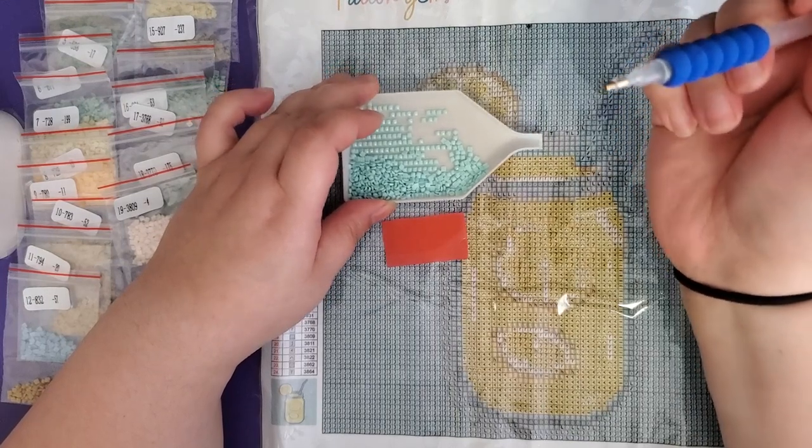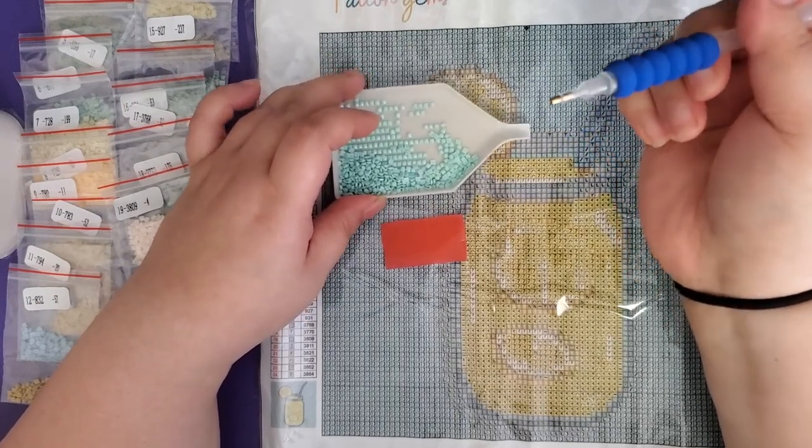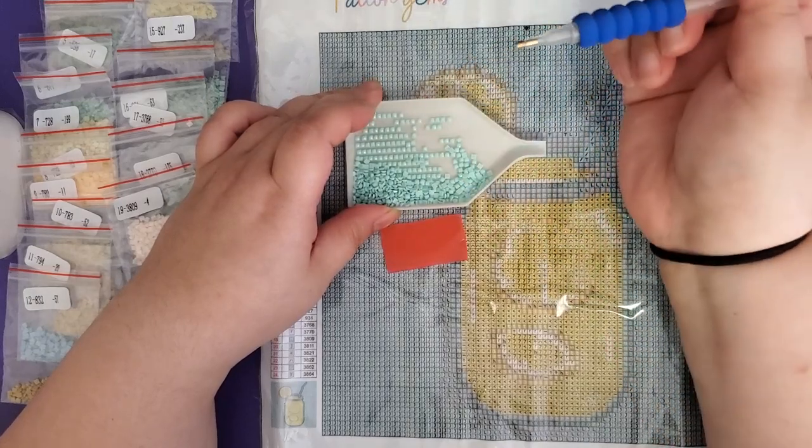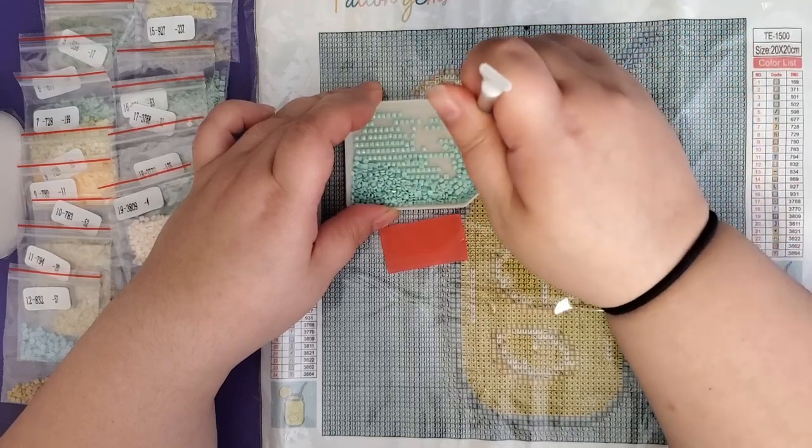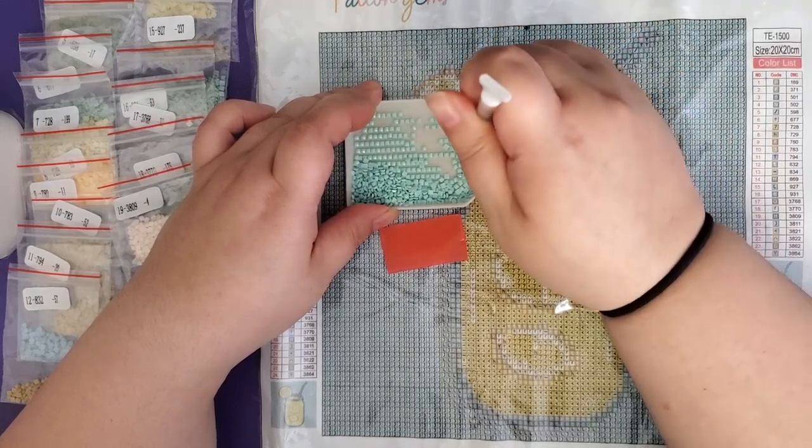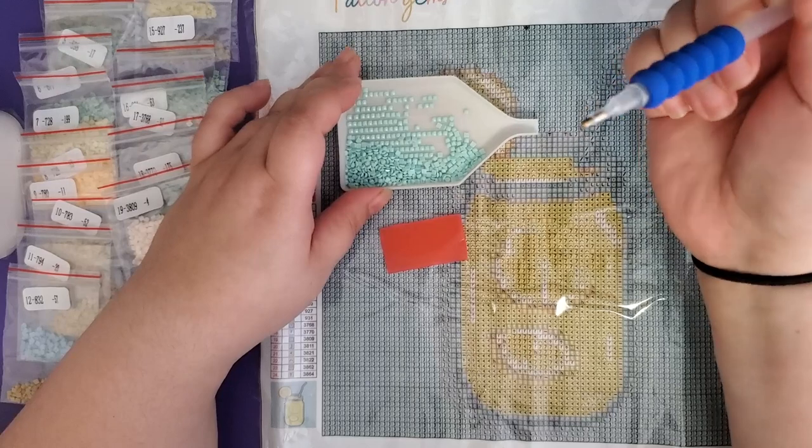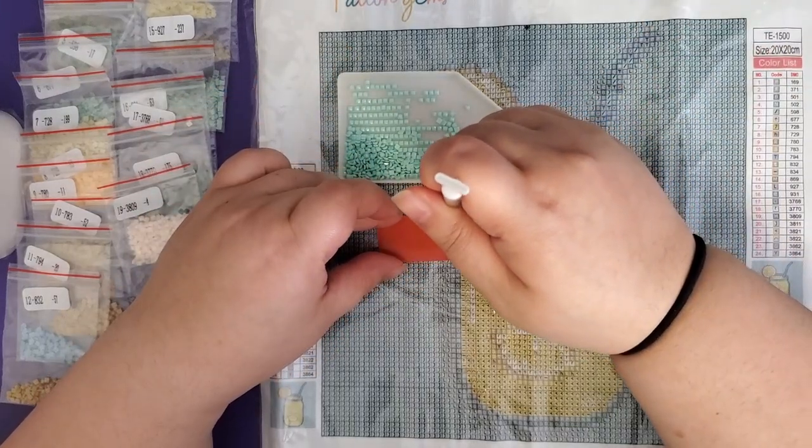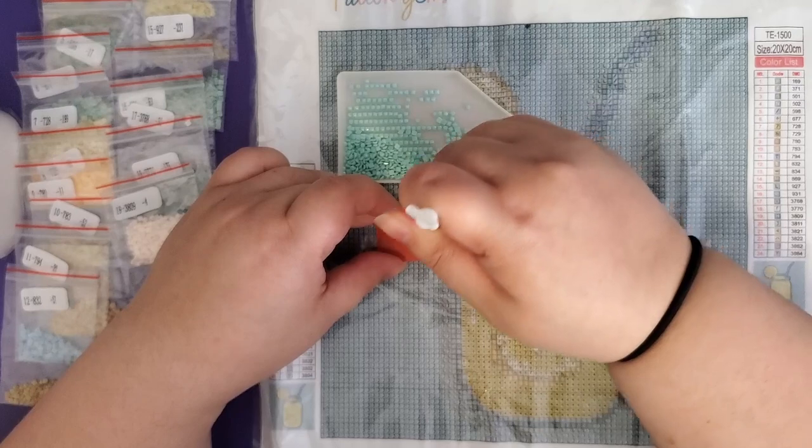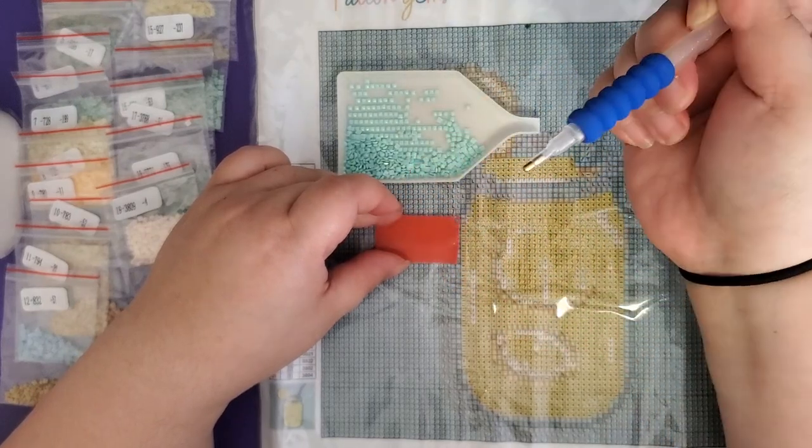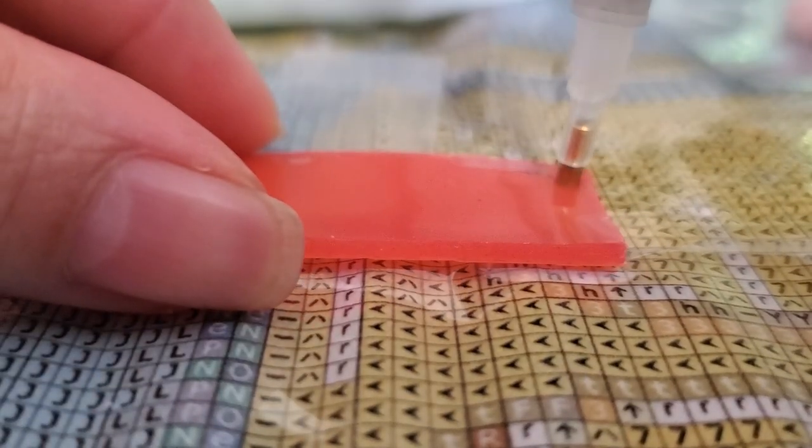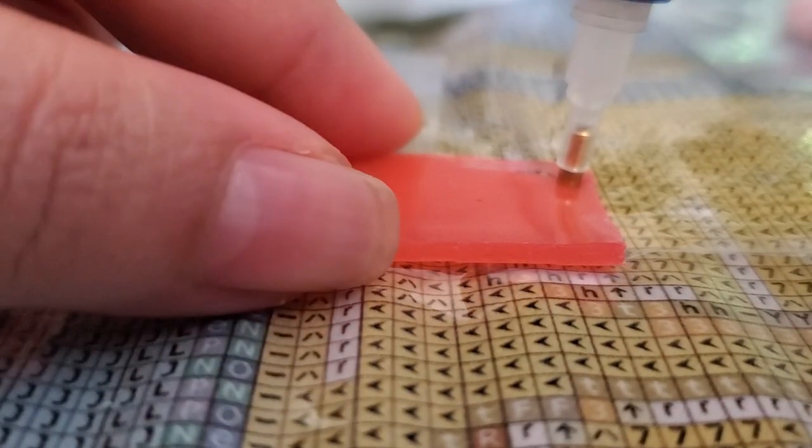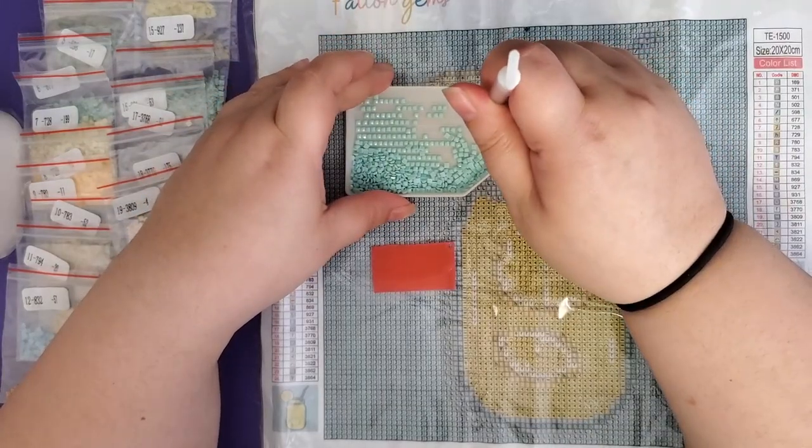And in case you guys are wondering why do we need wax, well, there's nothing in this pen right now. If I try this without anything in there, I cannot pick this up. So now we'll press firmly down into the wax, and then we're going to see a divot because the pen took up the wax and put it in here. So now we'll be able to pick up that diamond.